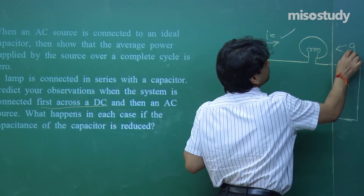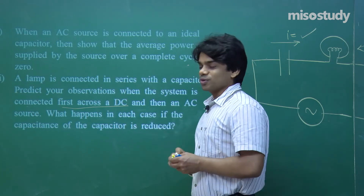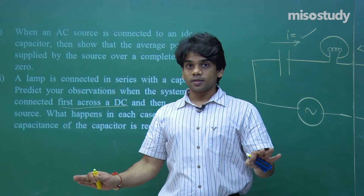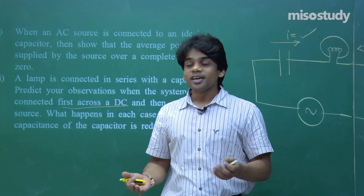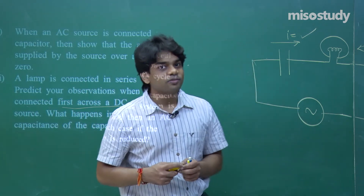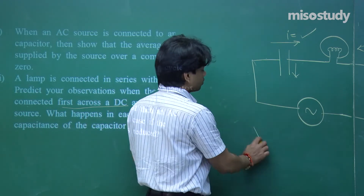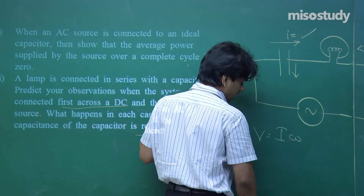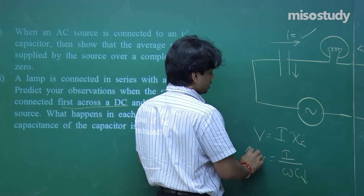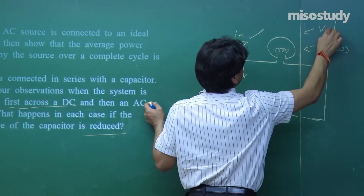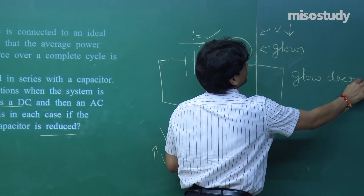In the AC case, if the capacitance is reduced: recall that V = I·χC = I/(ωC). If capacitance is reduced, voltage across the capacitor increases, and voltage across the bulb decreases. So the glow decreases as the capacitor value is reduced.